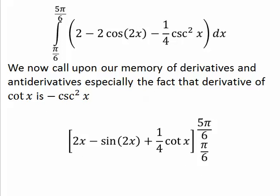And now we just remember that the derivative of cotangent x is negative cosecant squared x. So the antiderivative of negative cosecant squared x is just cotangent x. And we evaluate it from pi over 6 to 5 pi over 6.